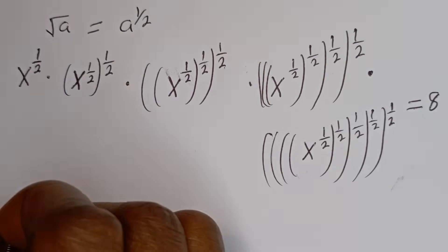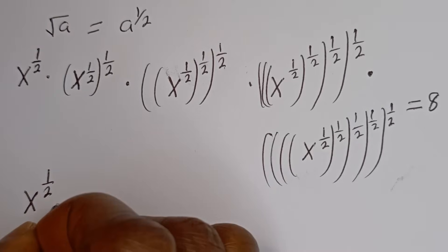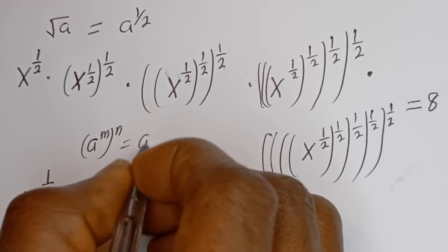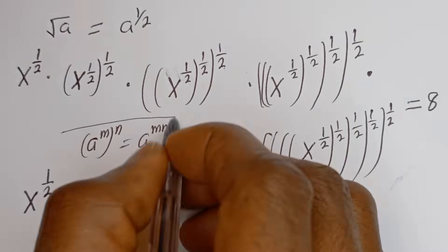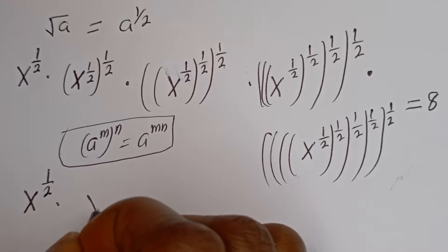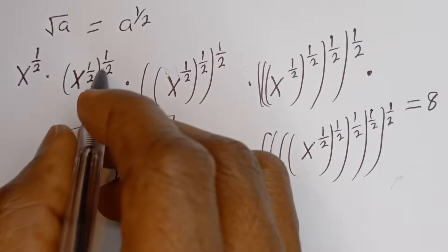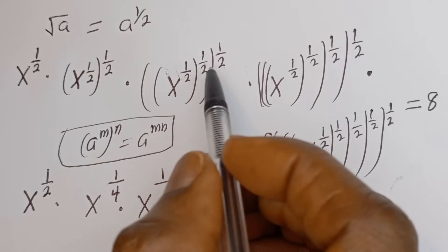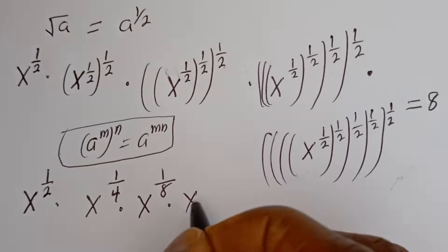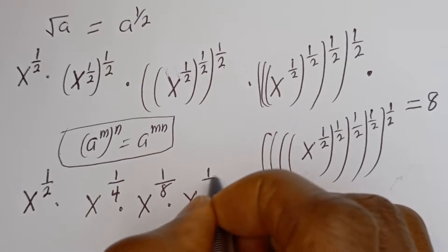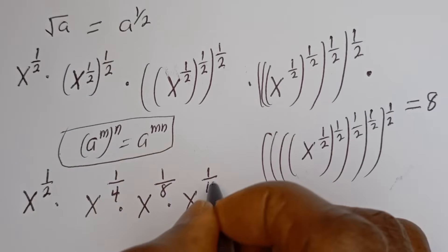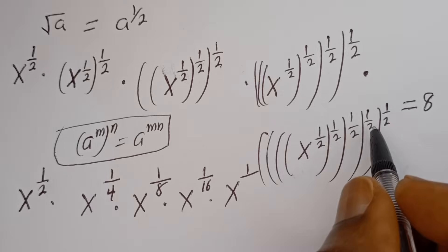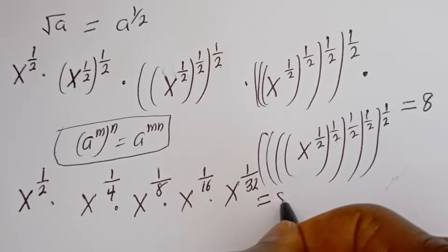From here, using the rule that A to the power of M to the power of N equals A to the power of M times N, we simplify: S to the power of 1 over 2, multiplied by S to the power of 1 over 4, multiplied by S to the power of 1 over 8, multiplied by S to the power of 1 over 16, multiplied by S to the power of 1 over 32, is equal to H.